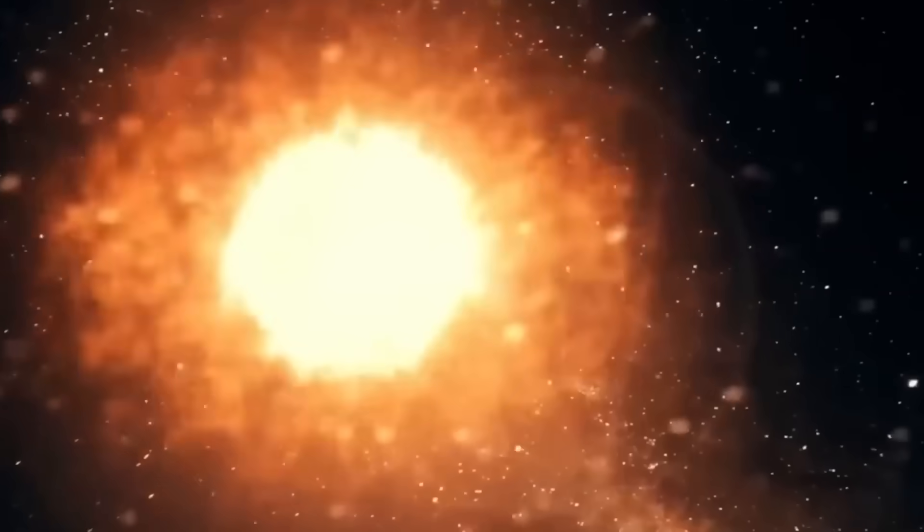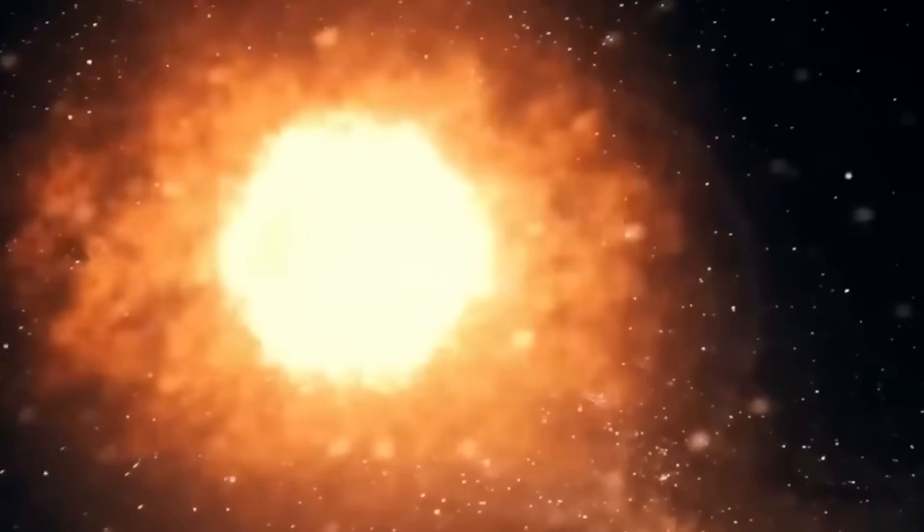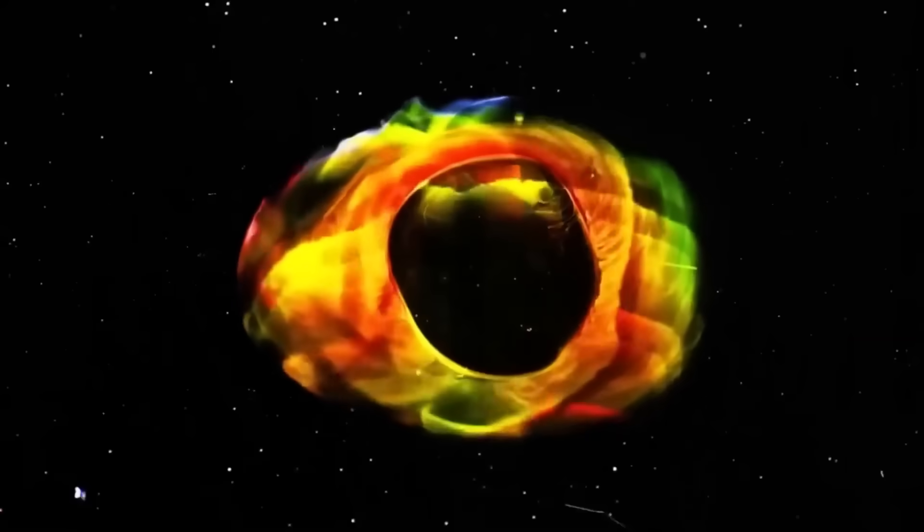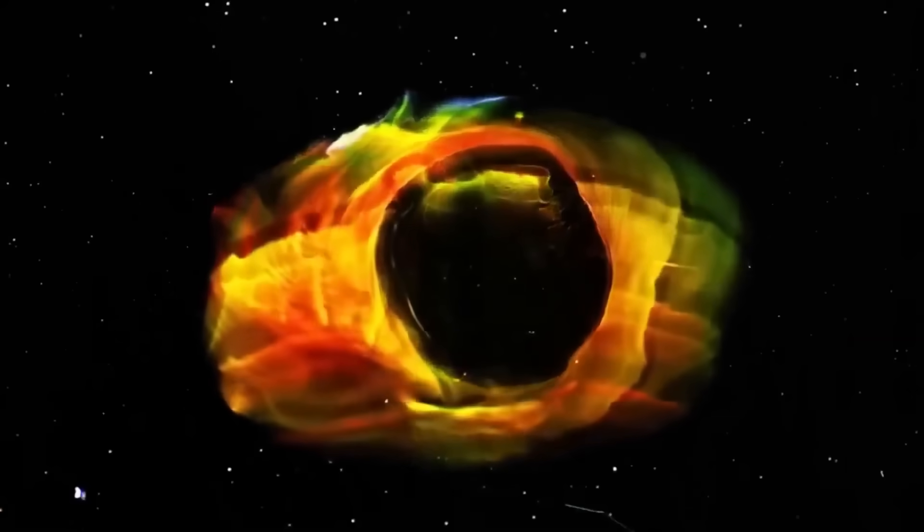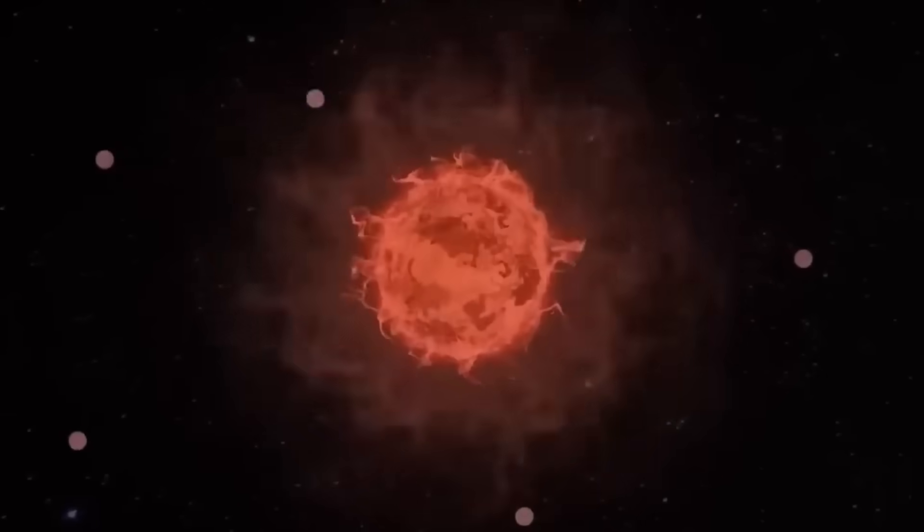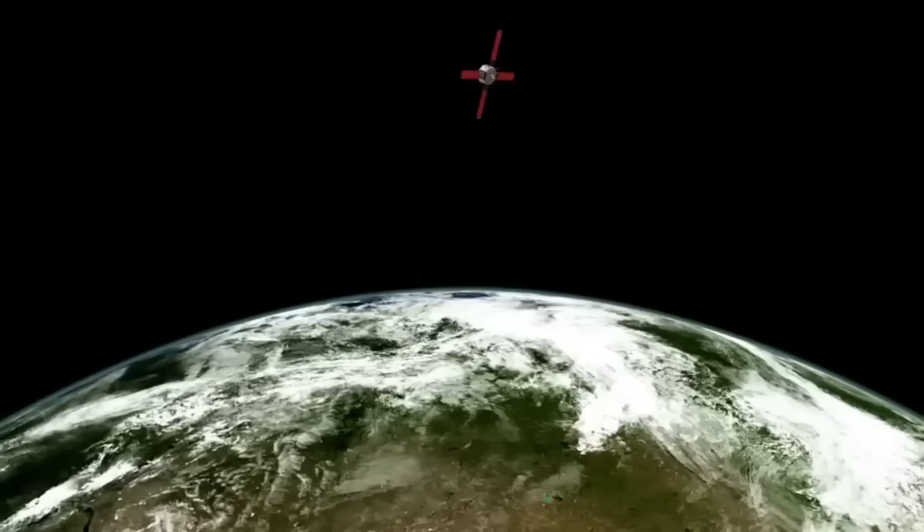However, its size is not the only thing that makes it noteworthy. Betelgeuse is at the very end of its life cycle, in a phase known as the red supergiant phase, where it is expanding and cooling after billions of years spent fusing hydrogen into helium in its core.